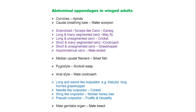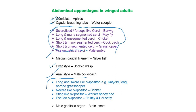Next, we are going to discuss about abdominal appendages in winged adult insects. They are: cornicles in aphids, caudal breathing tube in water scorpion, sclerotized forcep-like cerci in earwigs, median caudal filament in silverfish, figostyles in squalid wasps, anal styli in male cockroach, and different types of modification of reproductive organs in different insects, including male genitalia in male insects.